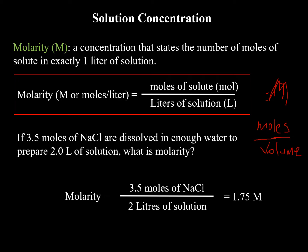Here we have a nice example: 3.5 moles of sodium chloride dissolved in water to prepare a two-liter solution. You have two of the variables — moles and volume. 3.5 divided by two liters is 1.75 molar. To the correct number of significant figures, the answer would be 1.8 molar.